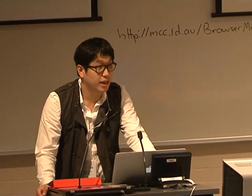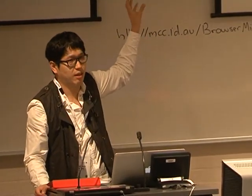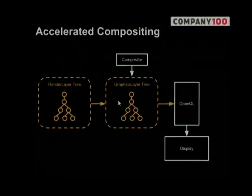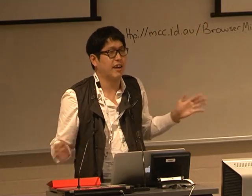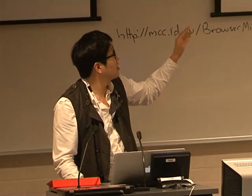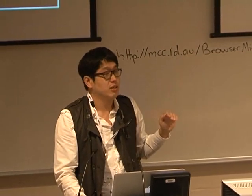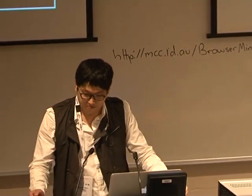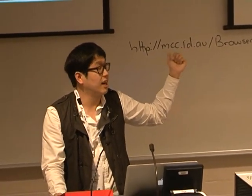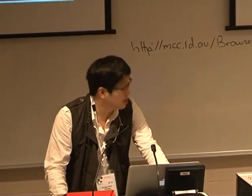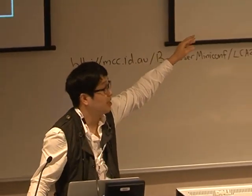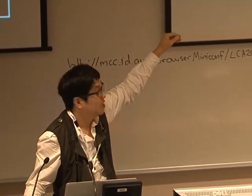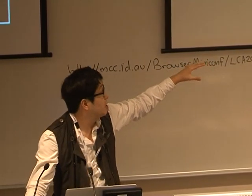In more detail, we can get the DOM tree from the given HTML page. From the DOM tree we need a render layer tree to draw something — like text, images, or DIVs. And we need the graphics layer tree to accelerate compositing. In the accelerated compositing case, the compositor uses the graphics layer tree to composite on the display using OpenGL. Accelerated compositing provides a way to accelerate animations, transitions, and 3D transforms using the GPU. The graphics layer tree has several properties like opacity or transform matrix, so we can easily use OpenGL to composite these layers onto the screen.